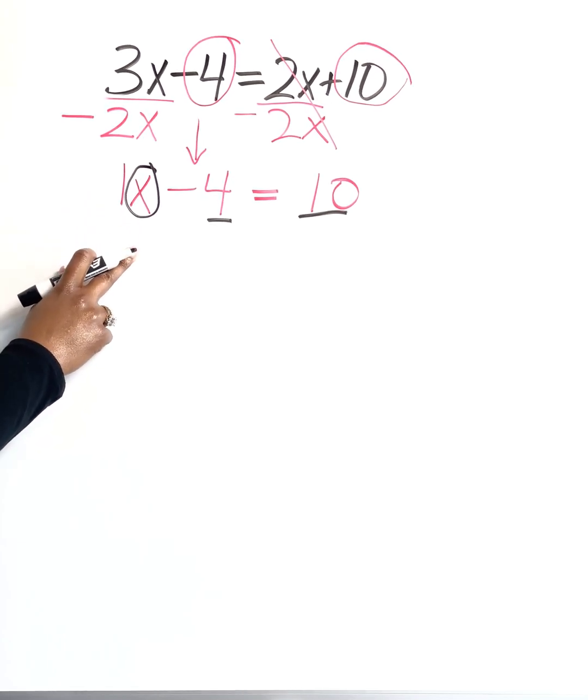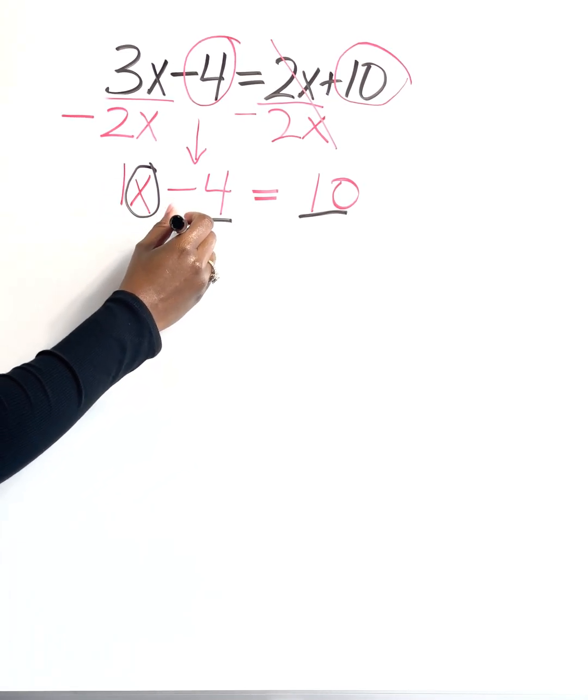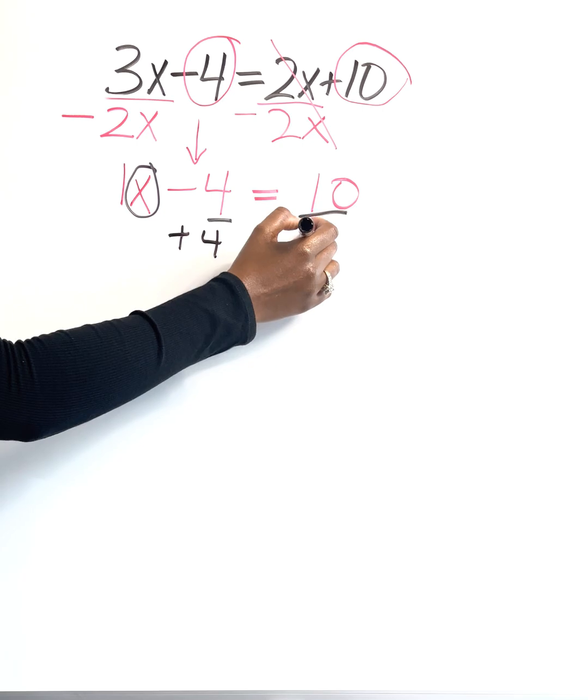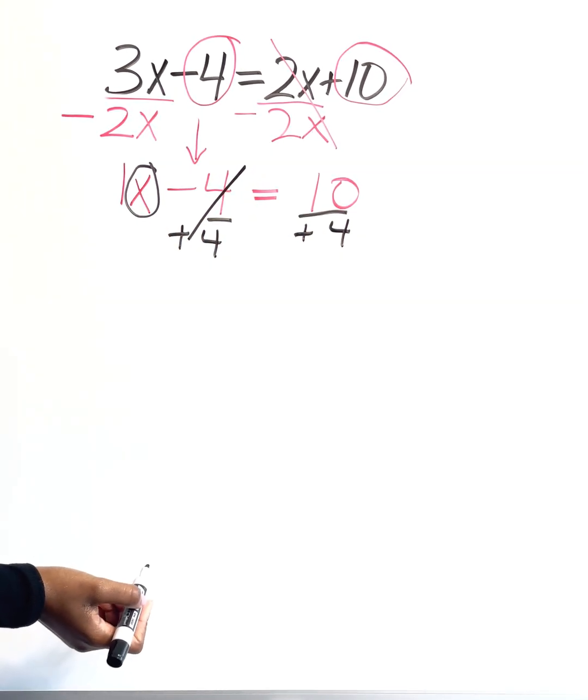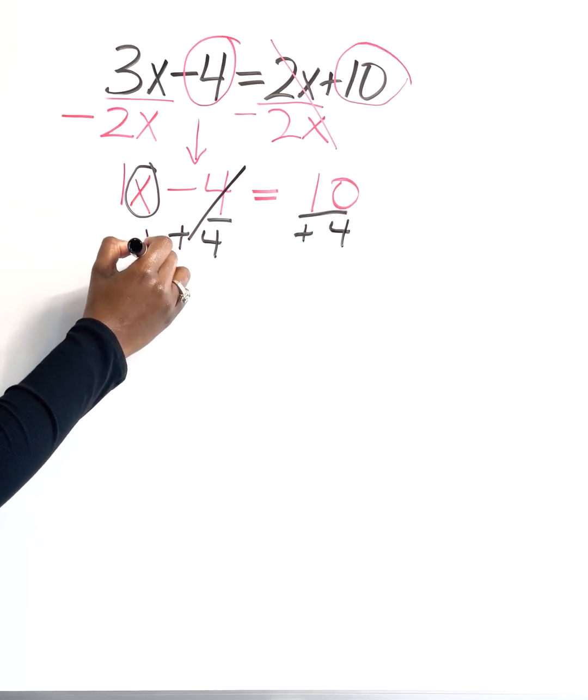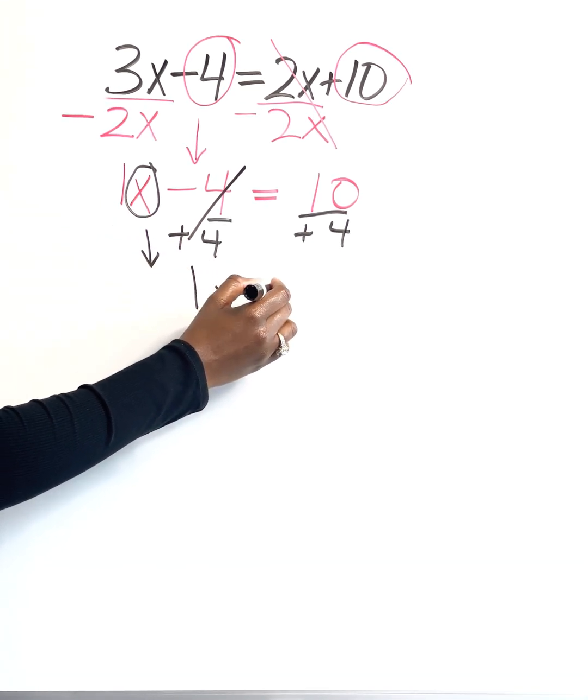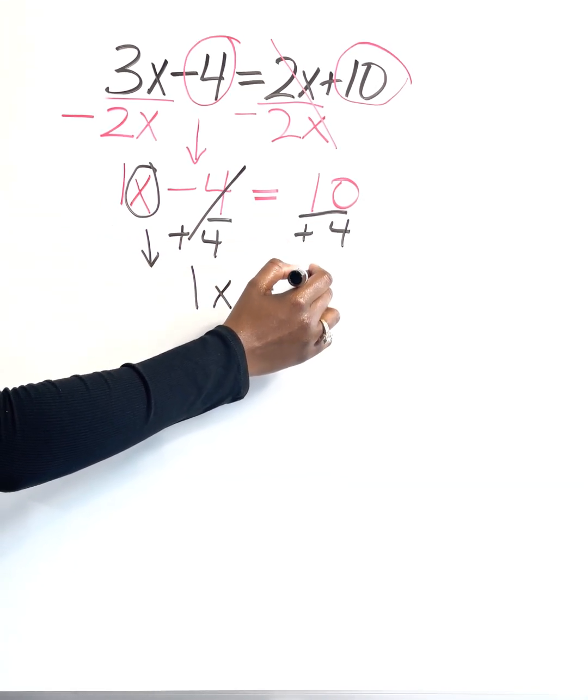So this is a minus 4. I'm going to go ahead and add 4 to both sides. These 4s are going to cancel out. I'm going to bring down my 1x, and then 10 plus 4 is going to give me 14.